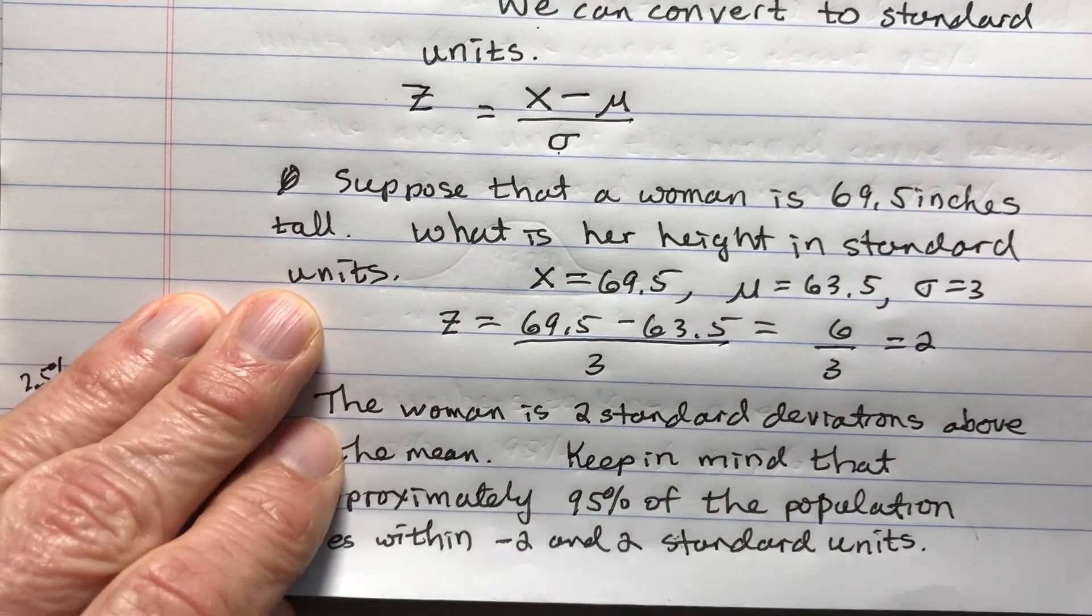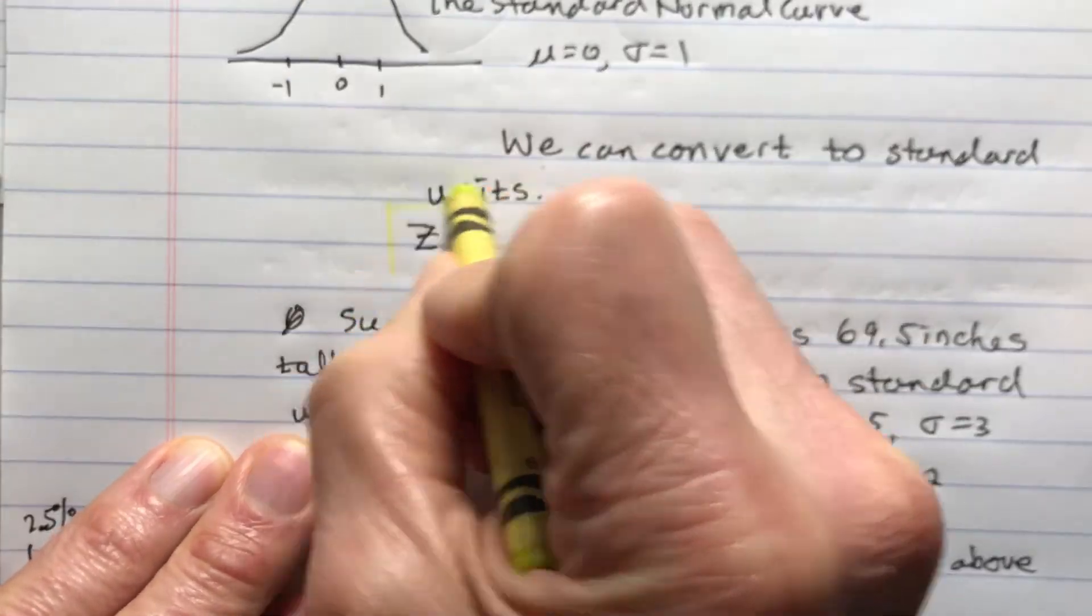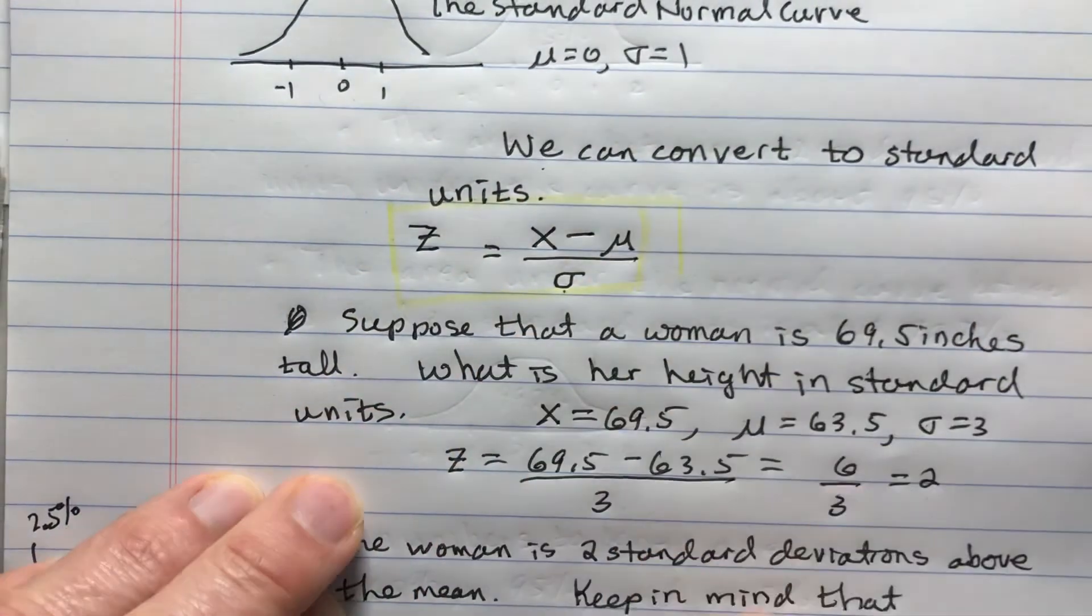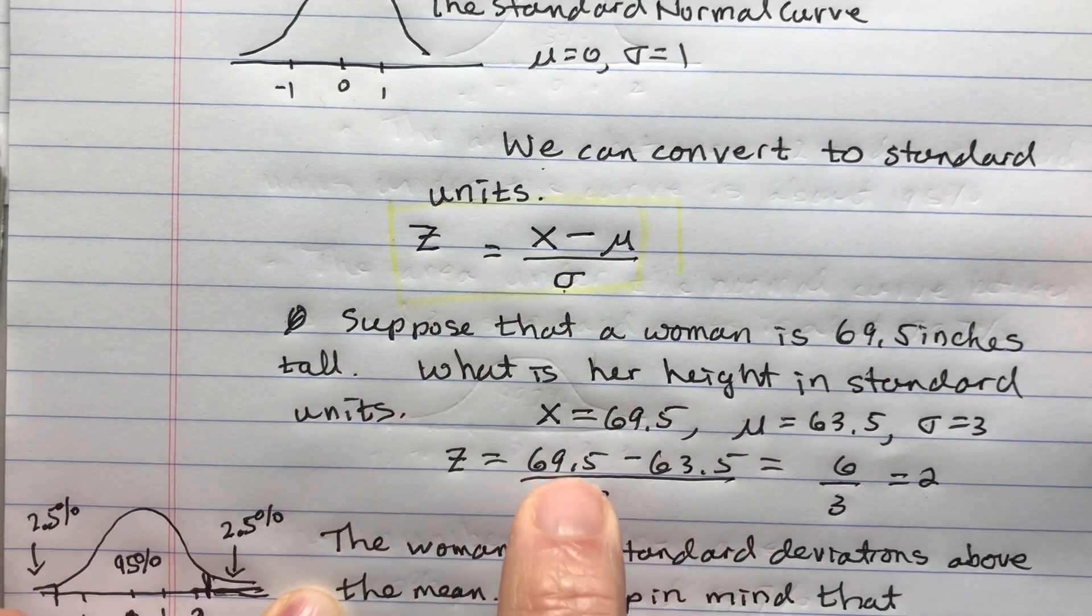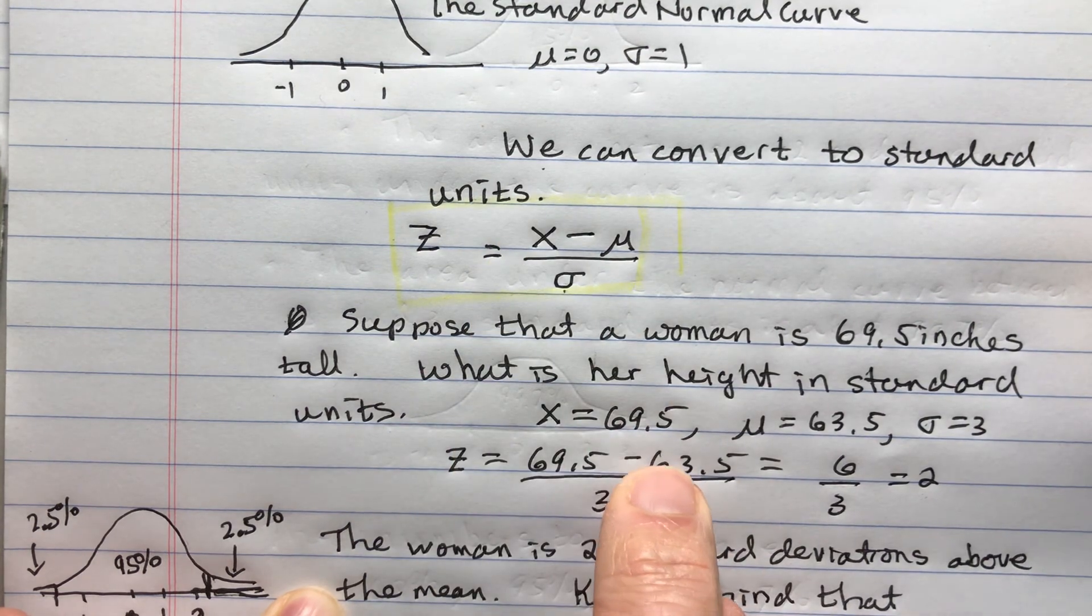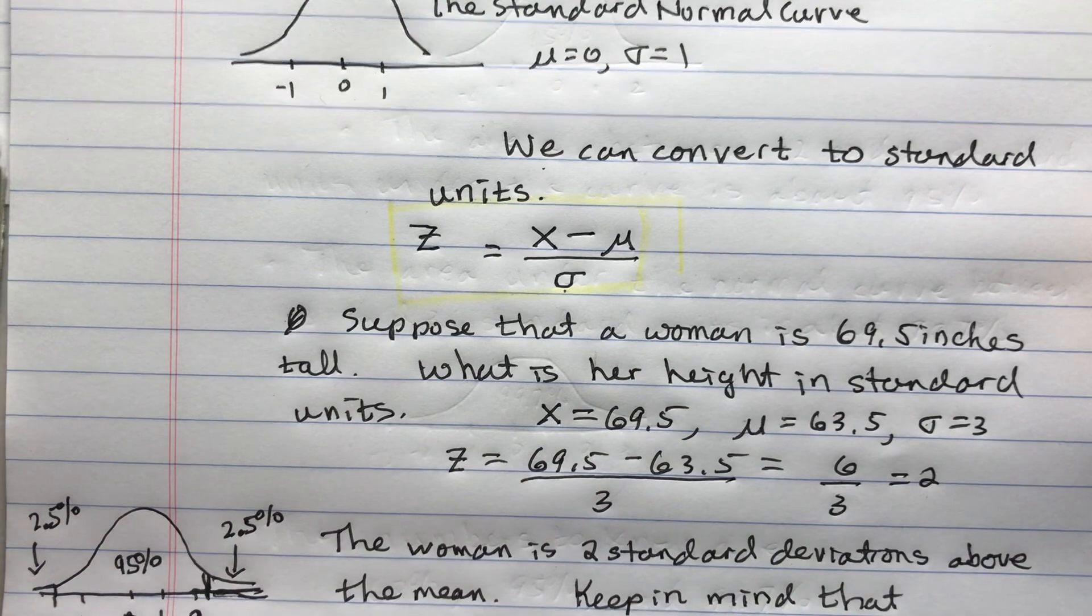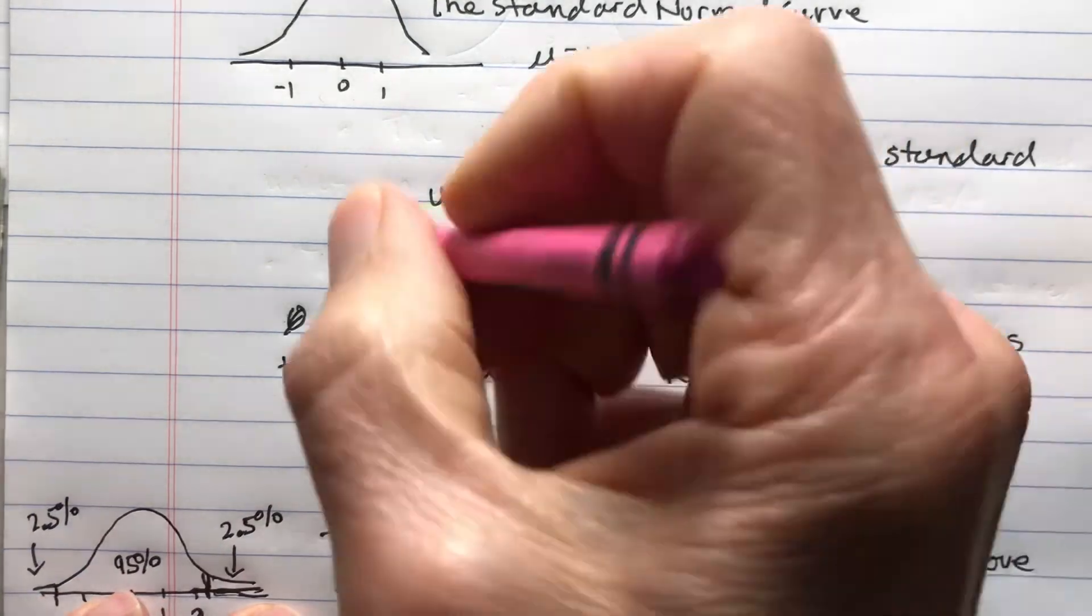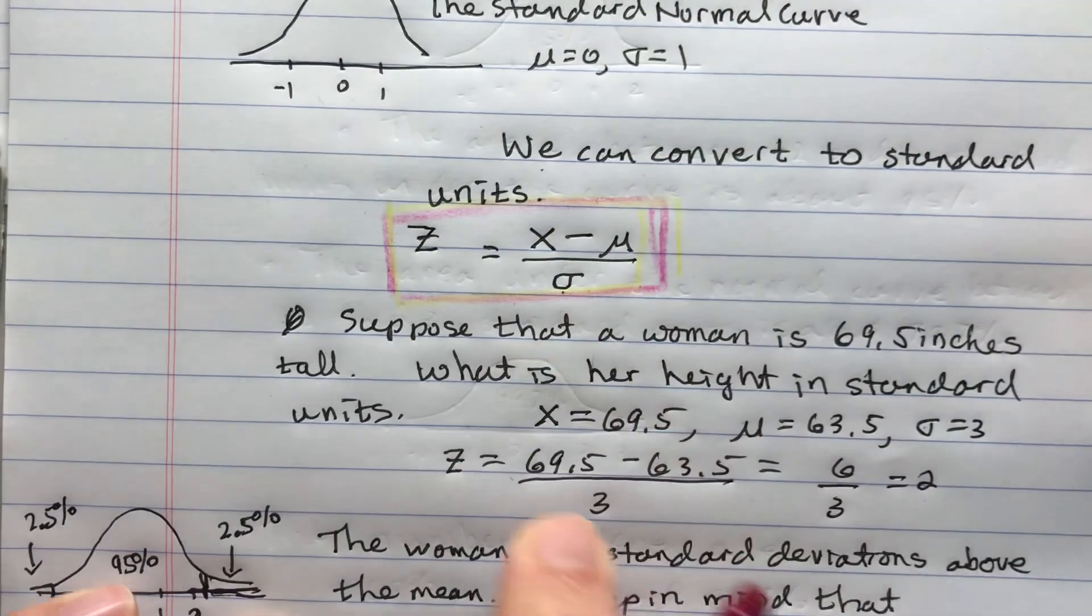Part of this video is about this formula. I hope that by talking through this, we can understand this formula. X, in this case, was 69.5. The average mu is 63.5 and the standard deviation is 3. This is the formula we can use so we don't have to think it through each time.